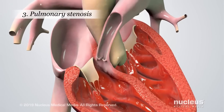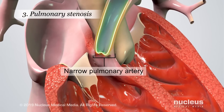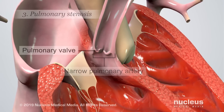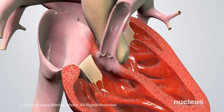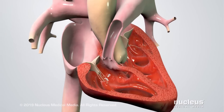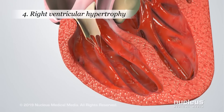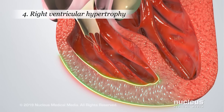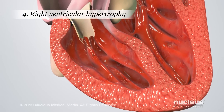In pulmonary stenosis, the main pulmonary artery is narrowed and the pulmonary valve doesn't open all the way. And right ventricular hypertrophy means the wall of the right ventricle is thicker than normal.